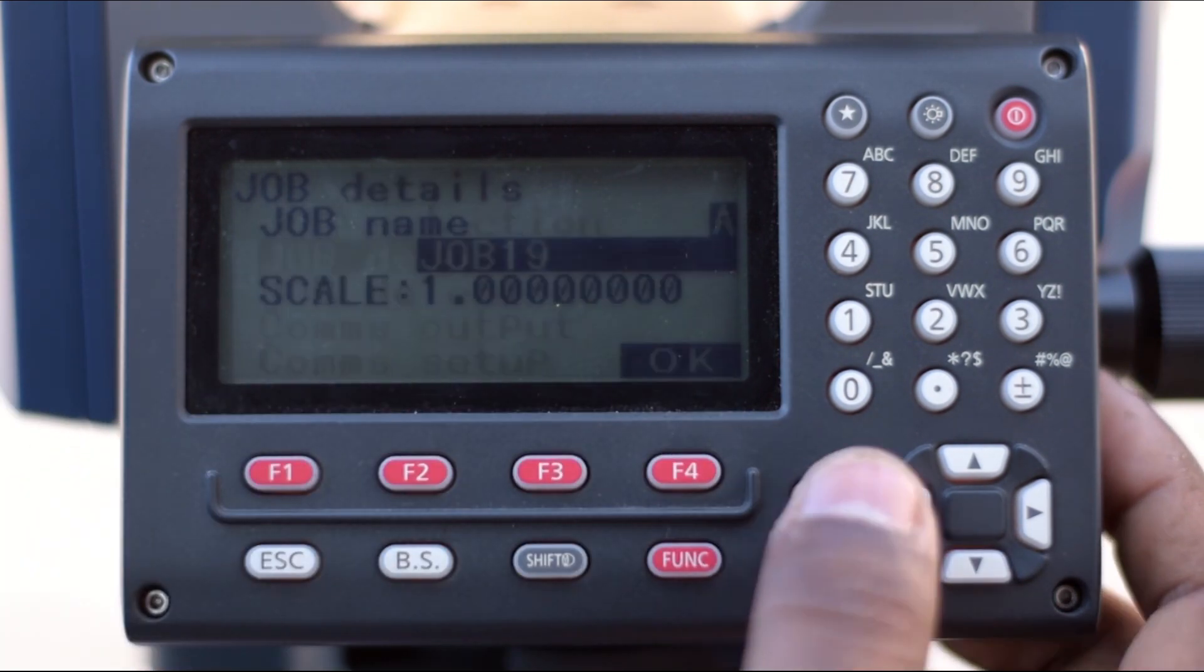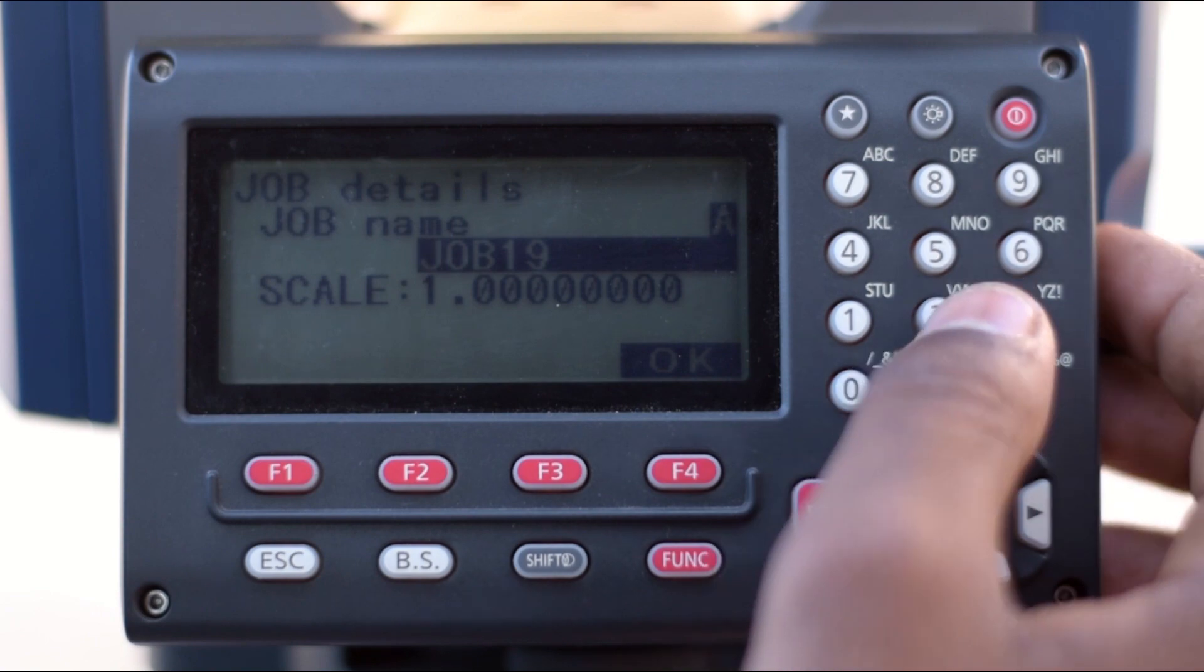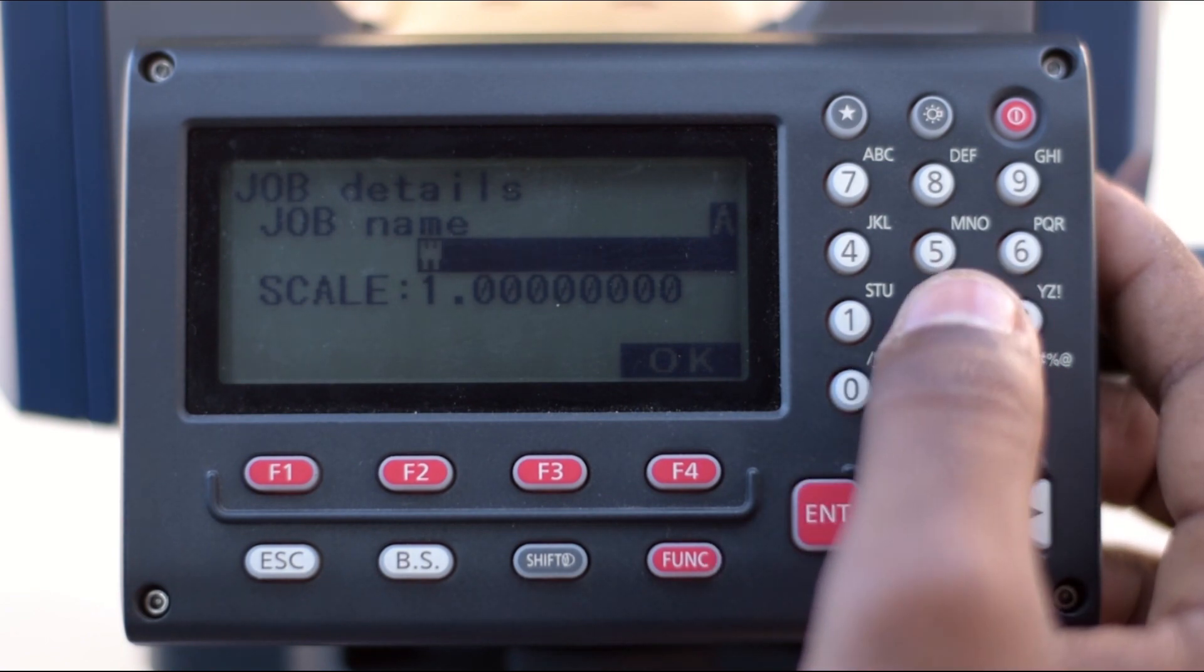Now we'll press Enter and then go to Job Details. After going to Job Details, we'll press Enter. As you can see, the job name is Job 19. You can change this job name by editing it using these keys. We can name it XYZ.